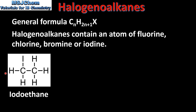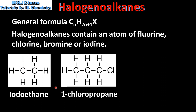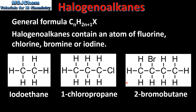Next we look at some examples of halogeanoalkanes. Our first example is iodoethane, which contains an iodine atom. Next is 1-chloropropane, which contains a chlorine atom, and finally we have 2-bromobutane, which contains a bromine atom.